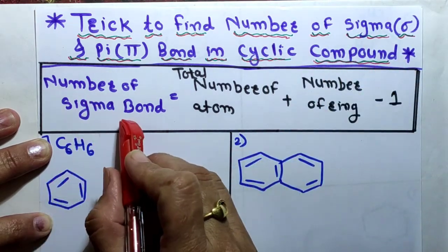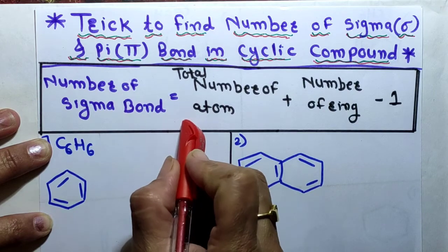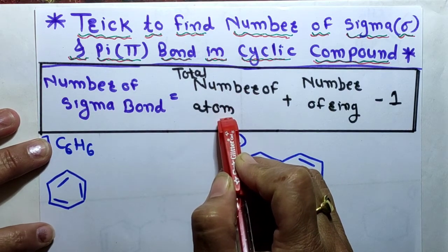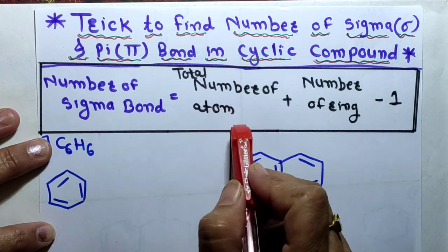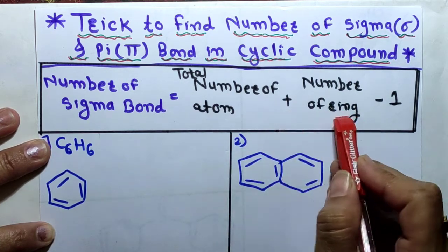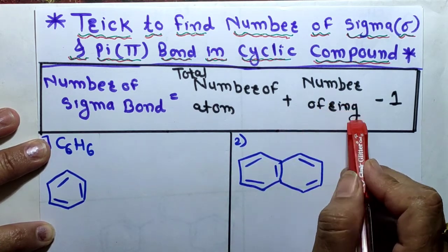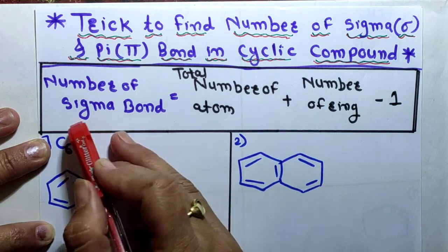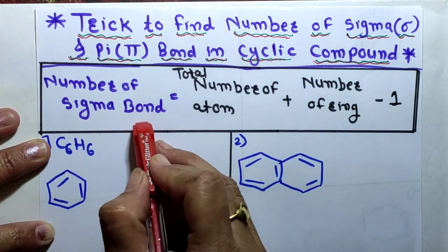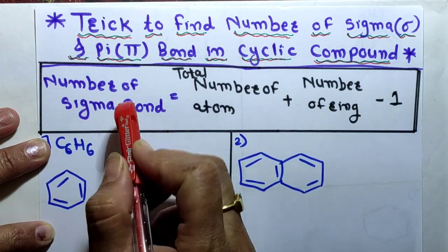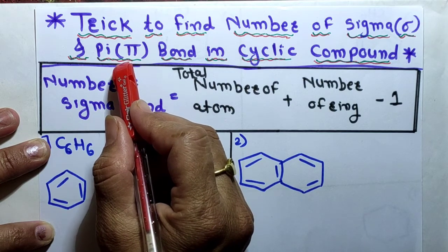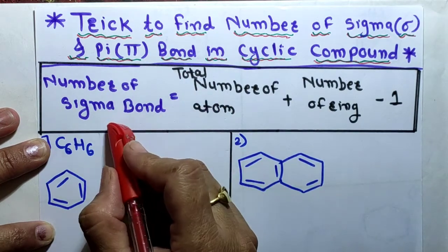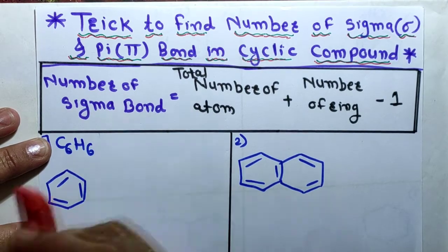The trick is: the number of sigma bonds is equal to the total number of atoms in the cyclic compound plus the number of rings, minus one. We can easily find out the number of sigma bonds using this formula. Note that this formula is not applicable to find the number of pi bonds in cyclic compounds — it is only for sigma bonds.